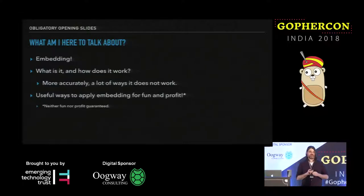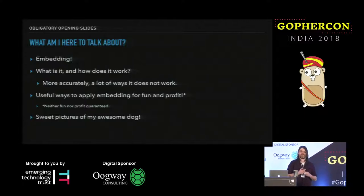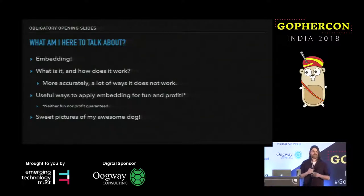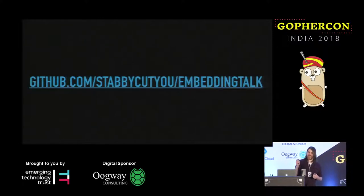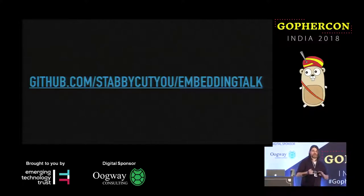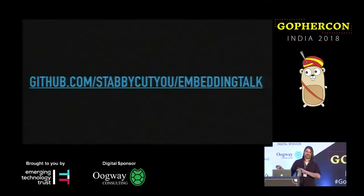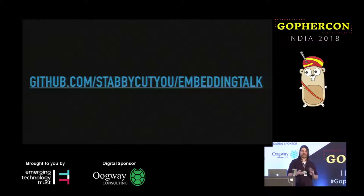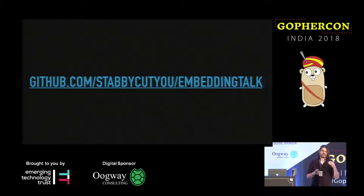Fun and profit are not guaranteed. I also have a lot of really sweet pictures of my awesome dog. By the end of the talk you'll probably either be sick of seeing the dog or really in love with the dog, depending on how you feel about dogs. During the talk I'm going to reference a bunch of different examples in code. It's really hard to accurately reflect code on a display. I have a GitHub repo called embedding-talk at sevic.u/embedding-talk, so if you're curious you can follow along there, going from example one to eight.